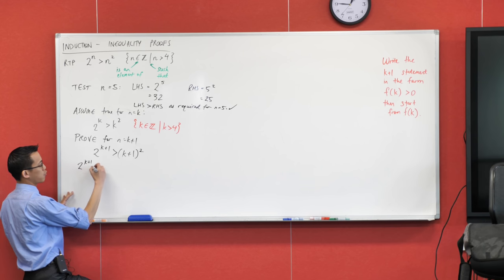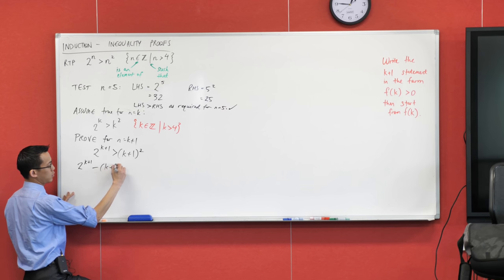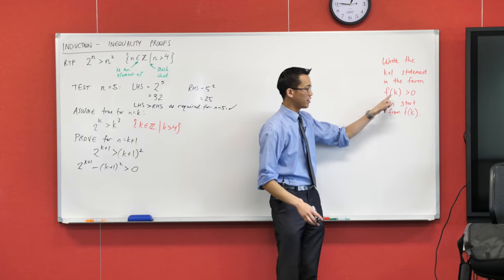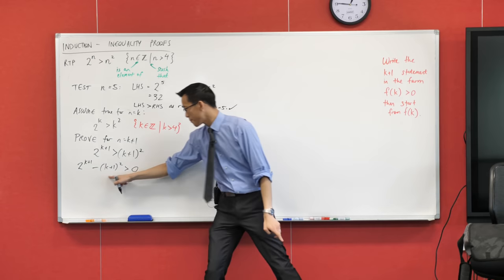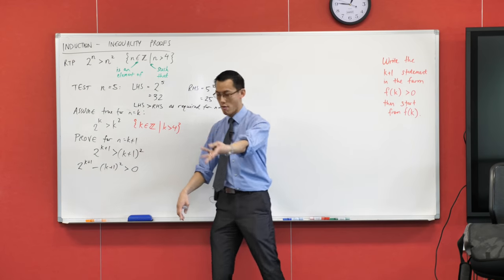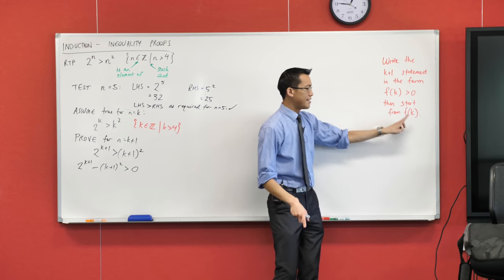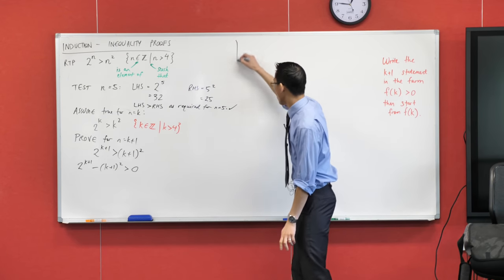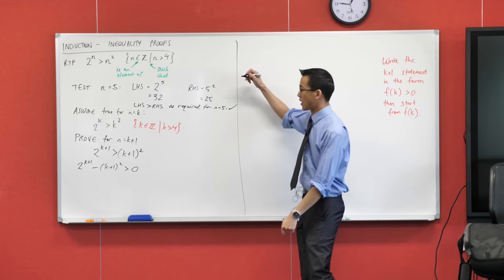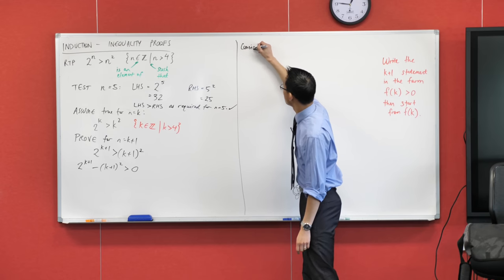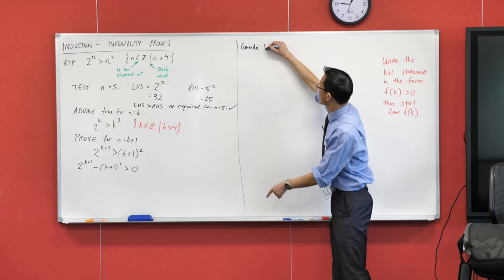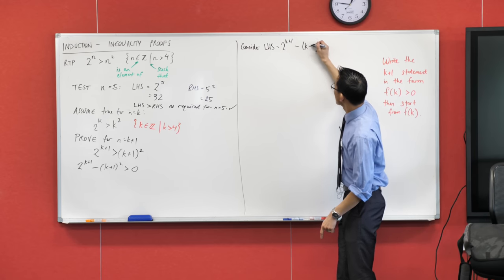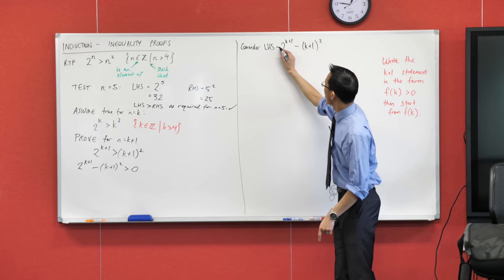So what I need to do is to get—here is the k plus 1 statement. I want to try and get it in the form f of k, all the stuff to do with k, on one side and then 0 on the other side. In this case, it's not that complicated. All I need to do is subtract this k plus 1 all squared. Then I've got 0 on the right hand side. Okay, so I've got it in the form, a function of k. See all that? There's my function of k. Put all the k's in, you'll get a number out. It's greater than 0.